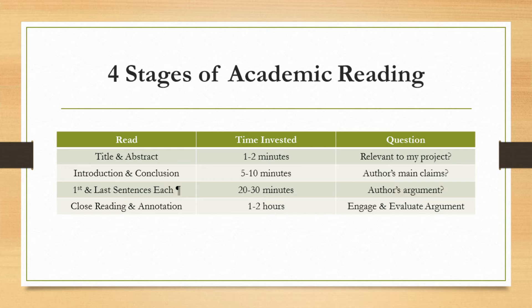At the third stage, read the first and last sentences of each paragraph and the full first and last paragraphs of each section. This should take twenty to thirty minutes and let you see the outline of the author's thought. It will put you in a position to decide whether or not to read the article slowly and in depth.